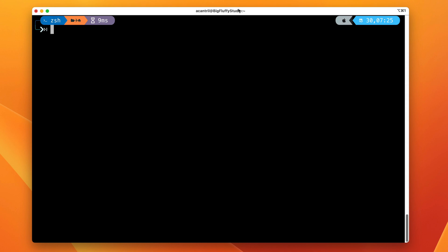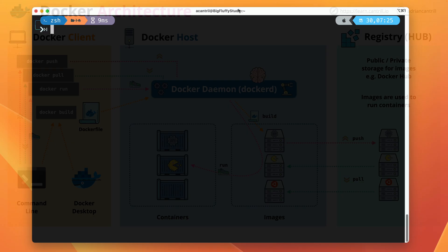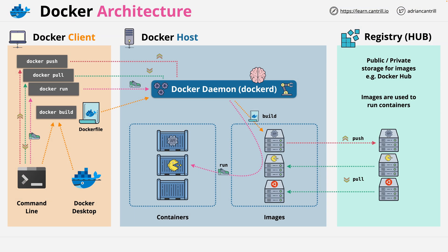Welcome back. In this part of the course, I want to demonstrate a really simple interaction between the Docker client and the Docker daemon. What we're going to do is use the Docker command line interface to run a sample container called Hello World, which is provided by Docker. This is going to demonstrate part of the process shown on screen. We're going to download a Docker image, spin up a container, and show you how to interact with it. Let's go ahead and get started.